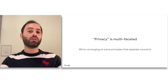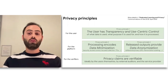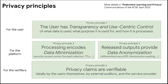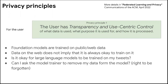We're currently converging towards some guiding principles that address separate concerns. In this talk I'll focus on a few of those principles. At a high level there are about four privacy principles — some that are for the user, others that are for the platform, and yet others for the verifiers. You can learn more about this in our recent Communications of the ACM paper titled Federated Learning and Privacy. The first principle is that the user has transparency and some user-centric control of what the data is used for and what purpose.